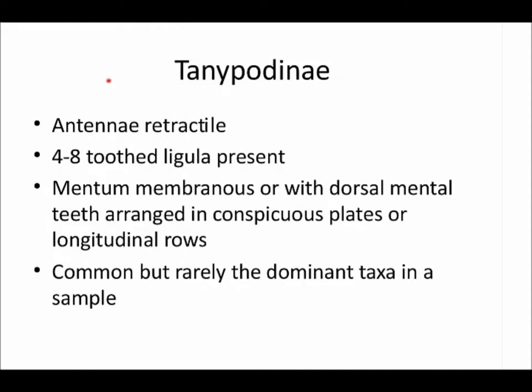The Tanypodinae are characterized by retractile antennae — sometimes extended, sometimes retracted into the head — so you'll see chironomids in your dish with no apparent antennae. They have a 4-to-8 tooth ligula present, which distinguishes them from all others. Their mentum is membranous and not obvious, and if there's any sclerotized structure, the dorsal mental teeth are arranged in a conspicuous plate or longitudinal row. This subfamily is common but rarely dominant in samples, because Tanypodinae are predatory — they feed on other chironomids. You can't have too many tigers in the forest.